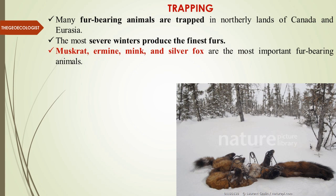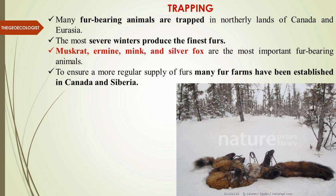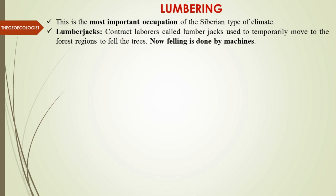The four major fur-bearing species in the Taiga biome are muskrat, ermine, mink, and silver fox. To ensure a more regular supply, many fur farms have been established where these animals are reared specifically for fur extraction, especially in Canada and Siberia. The most important occupation in Siberia is the lumbering industry. Contract laborers called lumberjacks used to temporarily move to forest regions to fell trees, but now felling is done largely by machines.